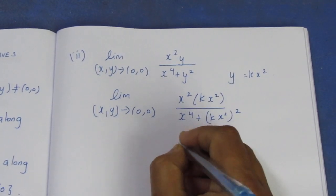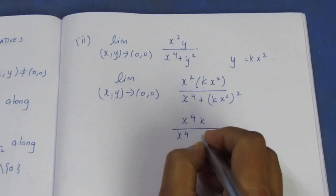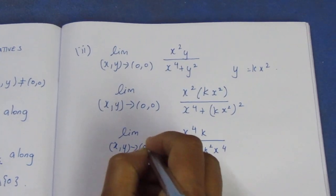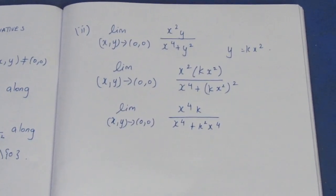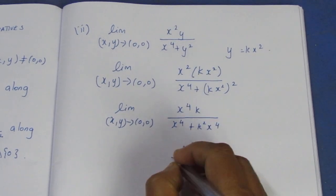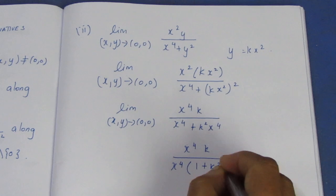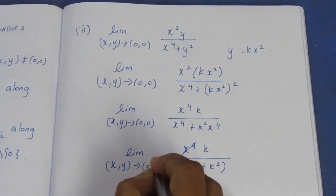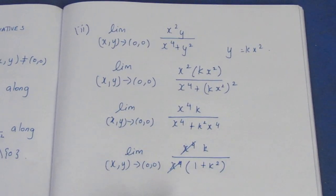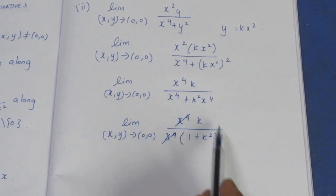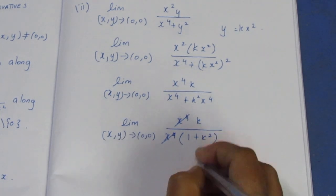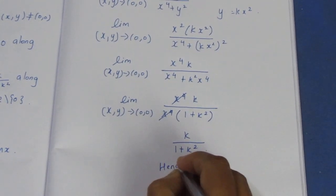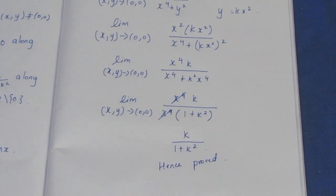We factor out x to the power 4: the limit as (x,y) tends to (0,0) of k times x to the power 4 divided by x to the power 4 times (1 plus k squared). Cancel x to the power 4 from numerator and denominator, leaving k divided by 1 plus k squared. Substituting the limit value confirms the result. That's the sum — thank you.